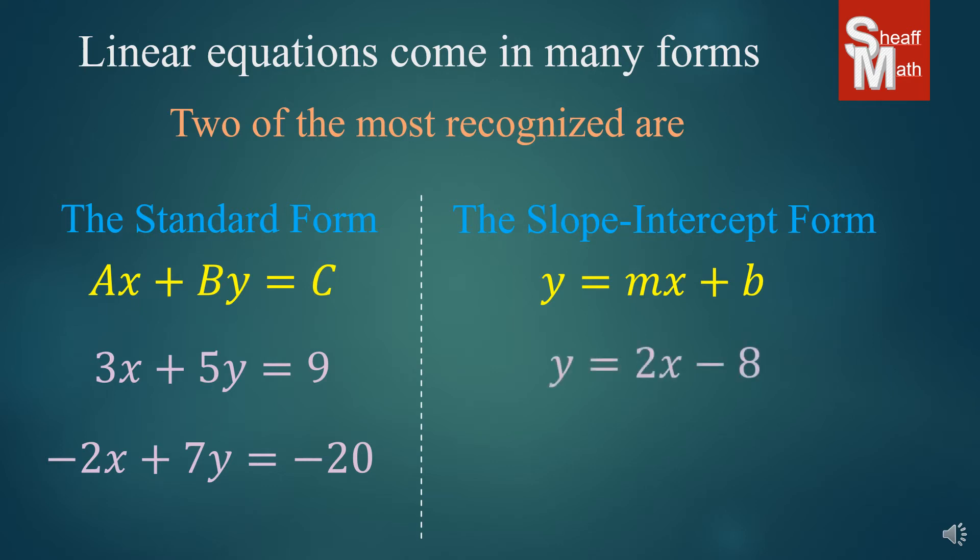Here's an example: y = 2x - 8, or y = -3/4x + 11. The y is always by itself, then the equal sign, then we have the x's, and then the whole number, or whatever number is at the end, adding or subtracting.